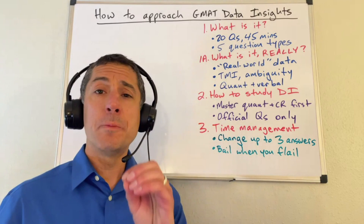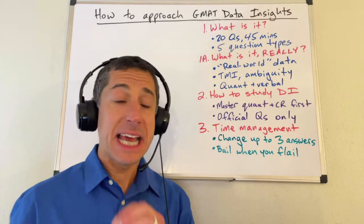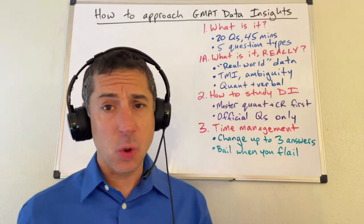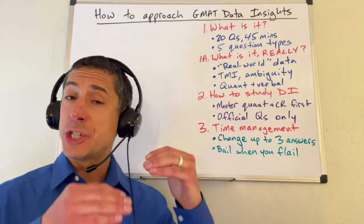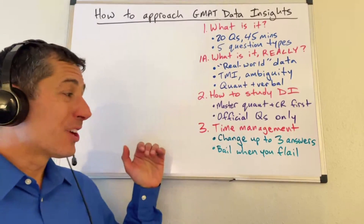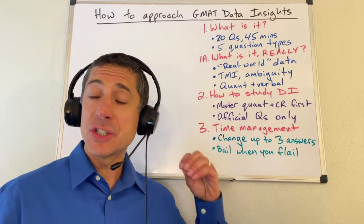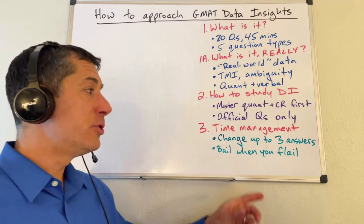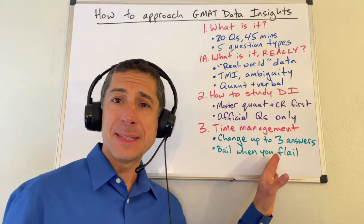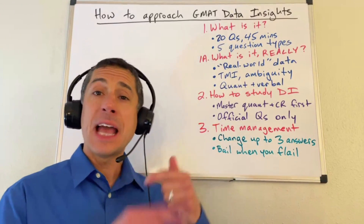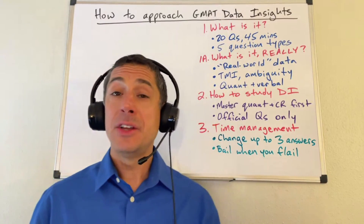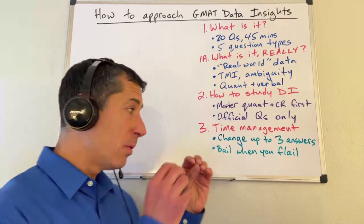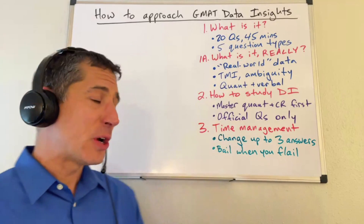When you get stuck, don't be a hero. It's an adaptive test — really hard to get all 20 questions right, and for most of you that is not a realistic goal. The test is trying to find the level of question at which you get roughly half right and half wrong, so the questions are going to get harder and harder if you're doing well. Don't be stubborn. The last thing you want is to spend four, six, eight minutes on a question and then have to scramble on others. Over-focusing on some questions and scrambling on others is how you destroy your score.